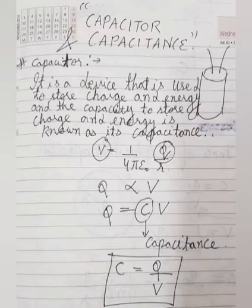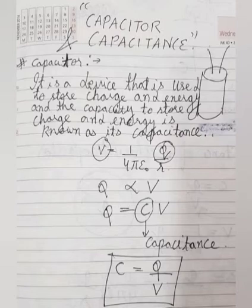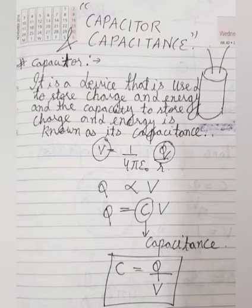Now there is another term related to capacitor which is known as capacitance. Capacitance is the capacity to store charge and energy. For example, if you have a tiffin in which you can store 5 parathas, then 5 parathas would be the capacity of that tiffin. Or if you have a bucket which can store only 5 liters of water, then the capacitance of that bucket is 5 liters. Similarly, the amount of charge and energy that a capacitor can store is known as capacitance.